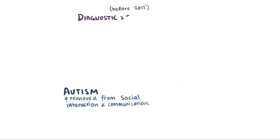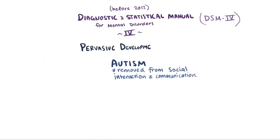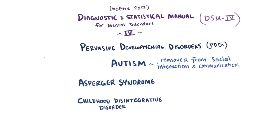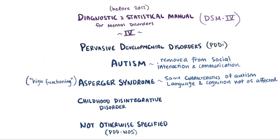Before 2013, the Diagnostic and Statistical Manual for Mental Disorders, fourth edition or the DSM-4, described autism as one of several pervasive developmental disorders, which also includes Asperger's syndrome, Childhood Disintegrative Disorder, and those not otherwise specified or PDD-NOS. Asperger's syndrome was used for children that appear to have characteristics of autism, like difficulties with social interaction or nonverbal communication, but don't generally have significant delays in language or cognitive development, and therefore Asperger's syndrome was sometimes referred to as a high-functioning form of autism.